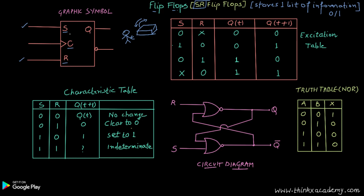S and R are the set and reset signals, and C is the clock. The clock is a signal that tells the flip-flop that it can now store some bits. If the clock signal transitions from zero to one — from low voltage to high voltage — it signals the flip-flop that the data inside can now change. So let's see the characteristic table for the SR flip-flop.